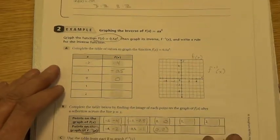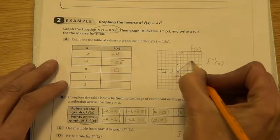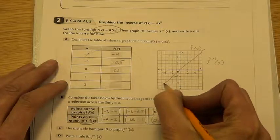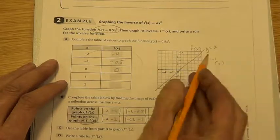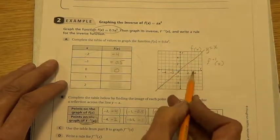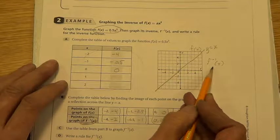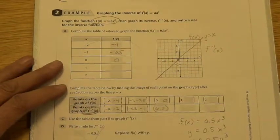Now the one thing that you should do when you graph those is you should also put in your Y equals X line, and then be able to show by perpendicular lines that the original function is an exact inverse of the inverse function, or vice versa, how you'd say it.